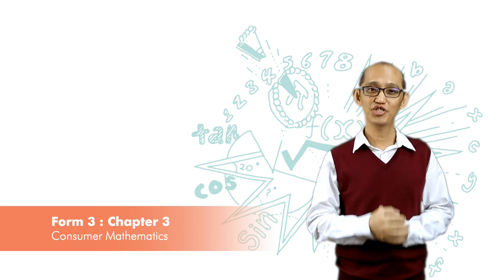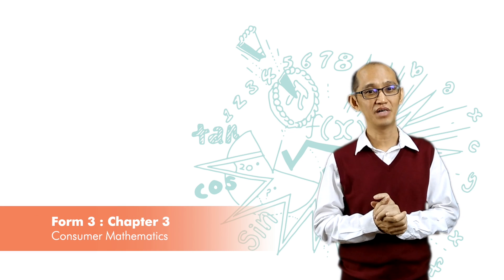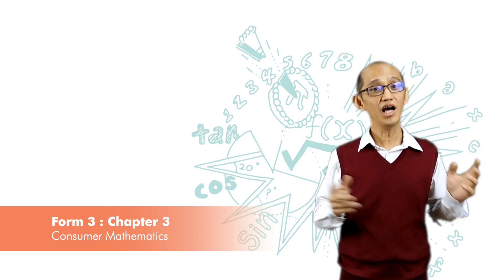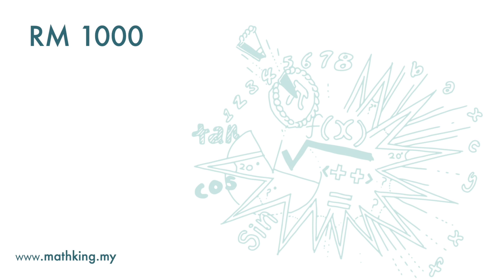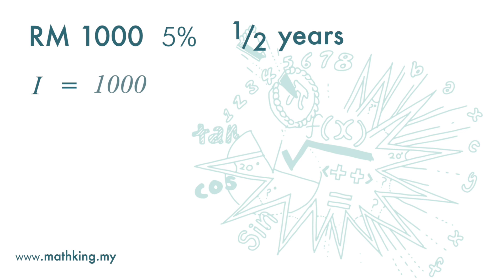Just now we were doing interest compounded yearly. What happens if you put your money in the bank for less than a year — let's say half a year? Let's say the principal is one thousand and the interest rate is five percent. Remember that interest is always quoted per annum, that is per year. In simple interest, the interest payment is principal of one thousand times five percent times one over two — that is half a year — so the interest is 25 ringgit.